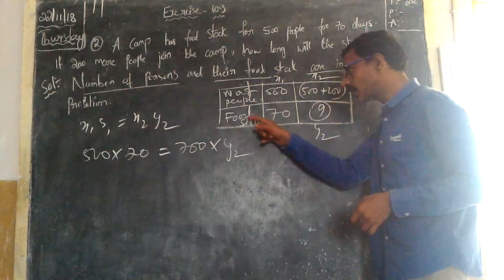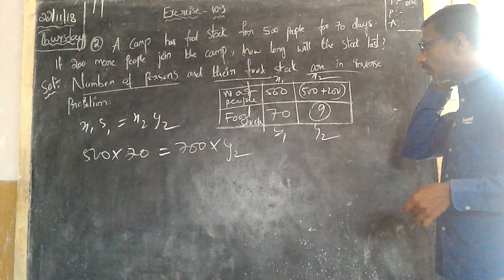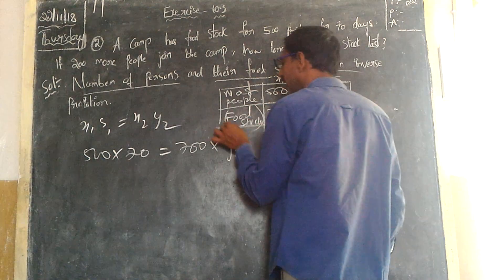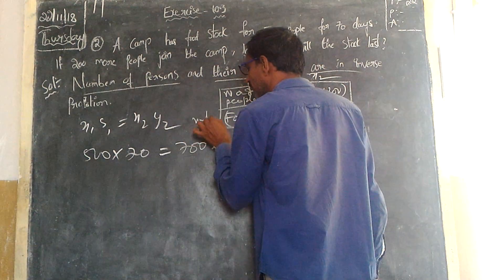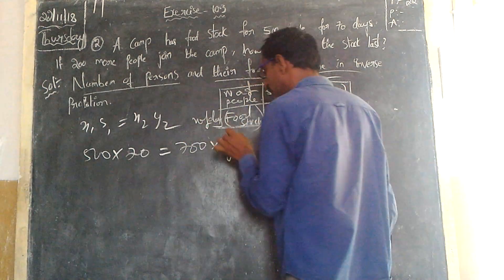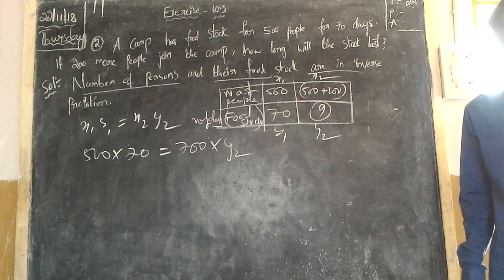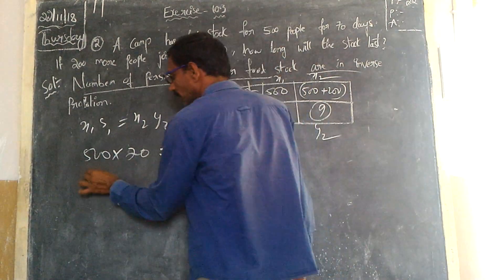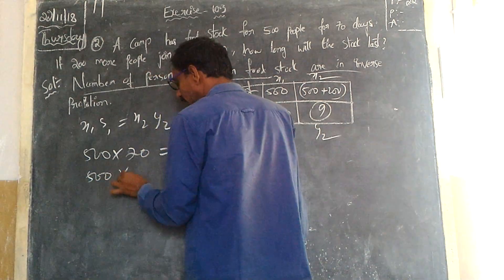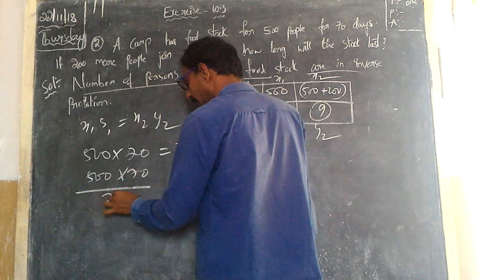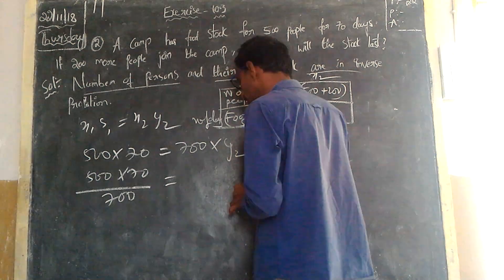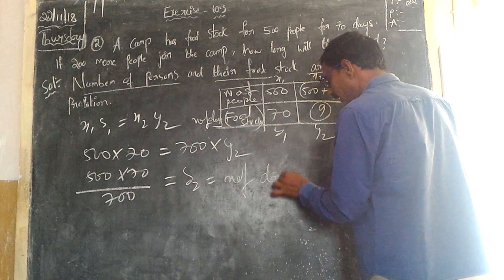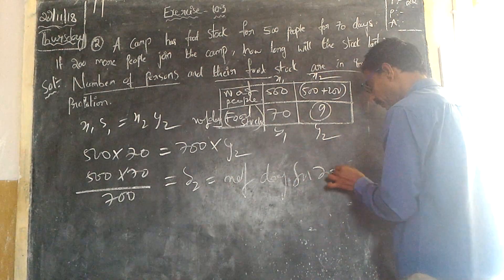Y2 is nothing but what? Put stock for days — the number of days. Y2 is nothing but the number of days. So, 500 into 70 is divided by 700 is equal to Y2. Y2 is nothing but the number of days for 700 people.